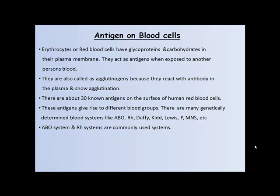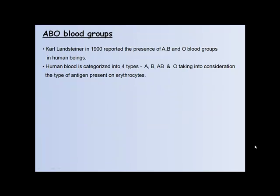There are many genetically determined blood systems like ABO, Rh, Duffy, Kidd, Lewis, P, MNS, etc. The ABO system and Rh system are the most commonly used systems. Karl Landsteiner in 1900 reported the presence of A, B, and O blood groups in human beings. Human blood is categorized into four types — A, B, AB, and O — based on the type of antigen present on erythrocytes.